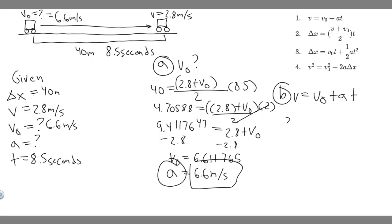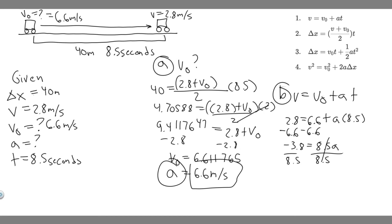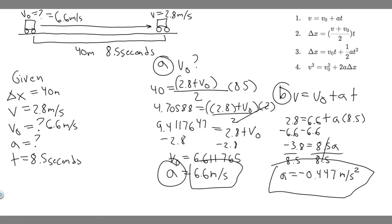So plugging in: v is 2.8 equals v sub zero, which is 6.6, plus a times t, which is 8.5. Subtracting 6.6 from both sides gives 2.8 minus 6.6, which is negative 3.8, equals 8.5 times a. Dividing both sides by 8.5, you get a equals negative 0.447 meters per second squared. You can round to negative 0.5 — just follow whatever your teacher wants. The negative sign indicates it's decelerating, slowing down rather than speeding up. So these are your two answers: v sub zero equals 6.6 m/s for part a, and a equals negative 0.447 m/s² for part b.